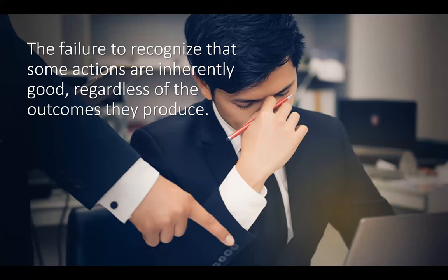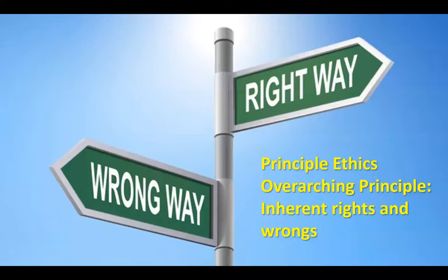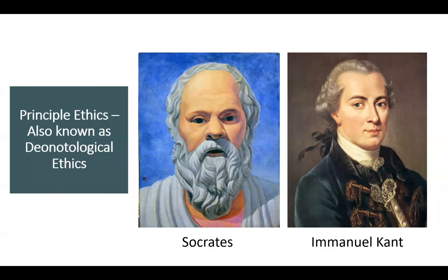Now that we've looked at consequentialist ethics, let's look at principle ethics. The overarching principle of principle ethics is that there are inherent rights and wrongs. Two principal proponents of principle ethics are Socrates and Immanuel Kant. Principle ethics is also known as deontological ethics — both names refer to the same approach. The Greek word 'dion' means duty or moral obligation, and so principle ethics says that there are certain moral principles or actions that we have a duty to perform or observe.